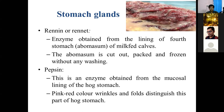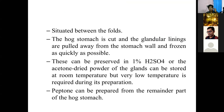Stomach glands yield renin or rennin, obtained from the lining of calf stomachs — the abomasum is cut out, packed, and frozen without washing. Pepsin enzyme is obtained from the mucosal lining of hog stomach. The hog stomach is cut, the glandular linings are pulled away, frozen, treated with 1% H₂SO₄, and a dried powder is prepared and stored at room temperature. These are the two main products from stomach glands: renin and pepsin.